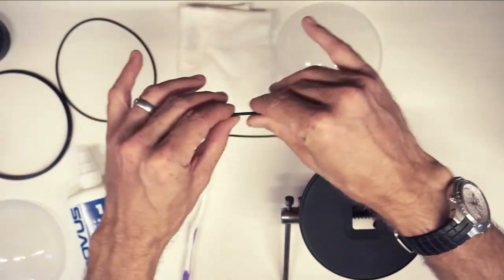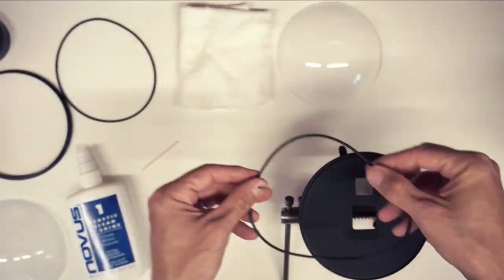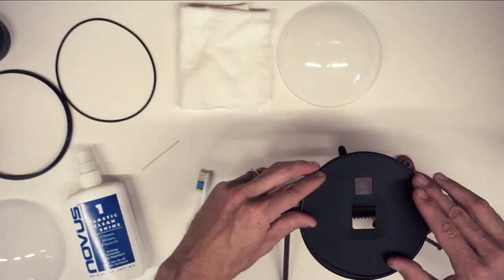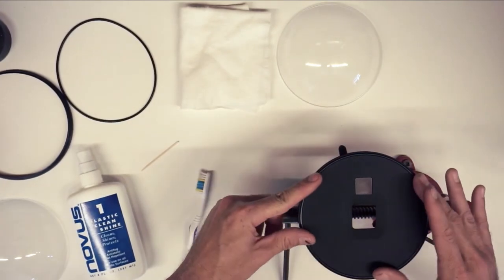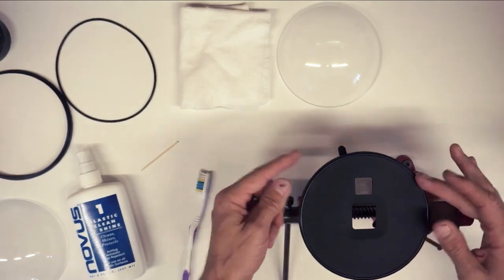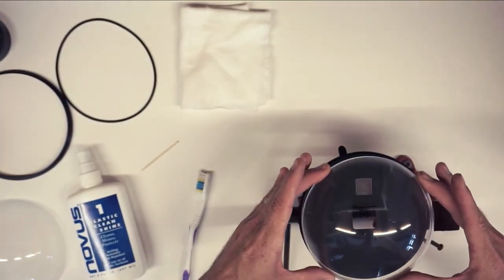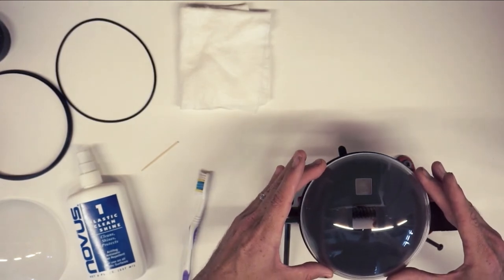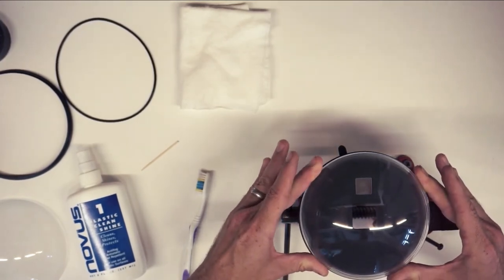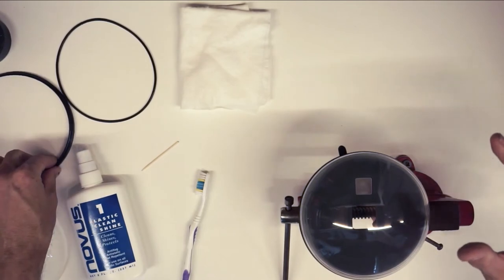My o-ring is still in good shape. It's not damaged, so I'm actually going to use the same one that was on there. Take your new acrylic, place it evenly on top of the o-ring.